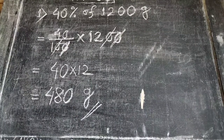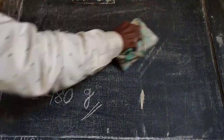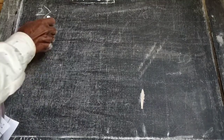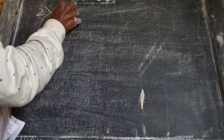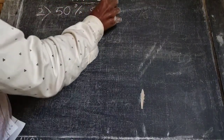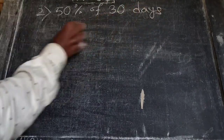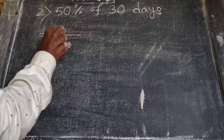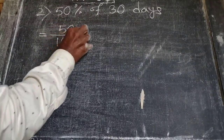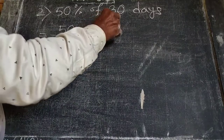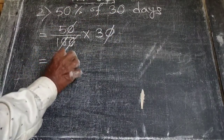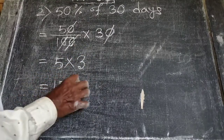Next, (2) 50 percent of 30 days: 50 by 100 into 30. After cancelling zeros, we have 5 into 3 equals 15. So the answer is 15 days.